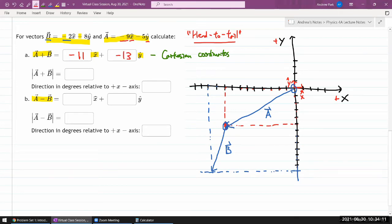And the answer you get is quite simple because you are simply adding the components together. So minus 2 plus minus 9 is minus 11, minus 8 plus minus 5 is minus 13. You're done.